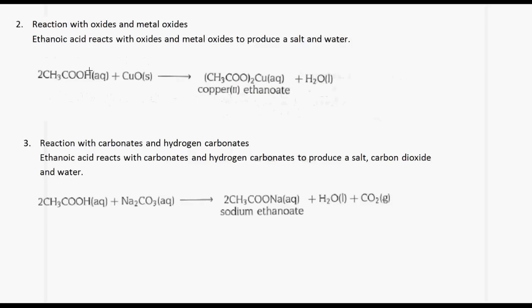The reaction of ethanoic acid with metal oxides produces a salt and water. In this example, ethanoic acid reacts with copper(II) oxide, and the products are copper(II) ethanoate — which is the salt — and water. So, metal oxide plus ethanoic acid produces a salt and water.